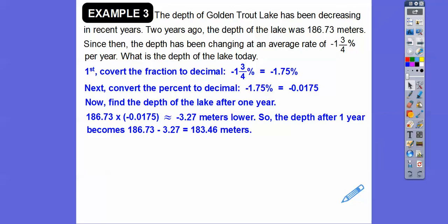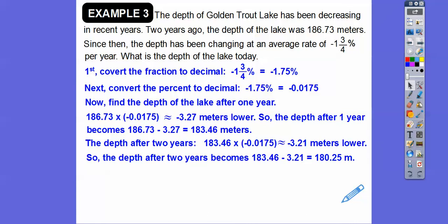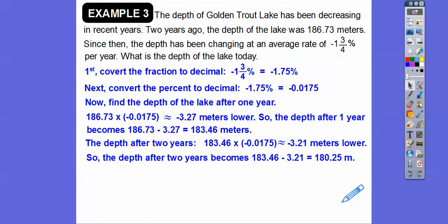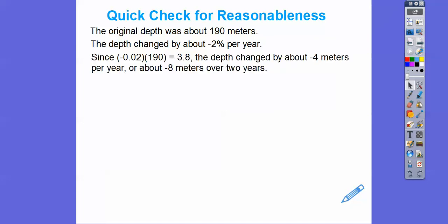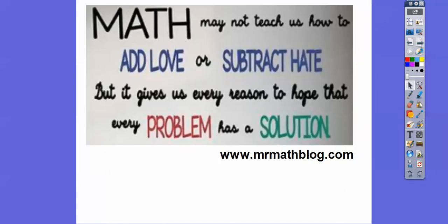After two years, we apply that negative 0.0175 rate again — it goes down an additional 3.21 meters — so the depth after two years becomes 180.25 meters. Let's check for reasonableness: the original depth was about 190 meters — rounding 186 up. The rate changed about 2% per year — rounding 1.75% up. So 0.02 times 190 is 3.8 meters per year, or about 8 meters in two years. Taking 8 from 190 gives 182, which is close to our true answer of 180.25. So it's a reasonable answer. All right, I hope that makes sense — take care, and don't give up!